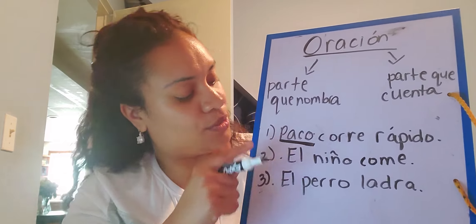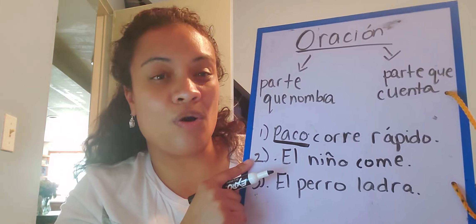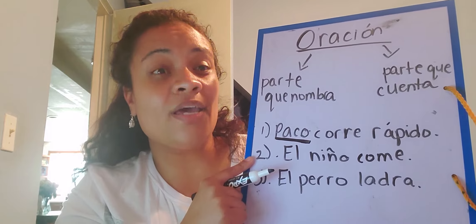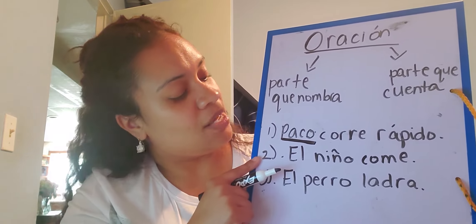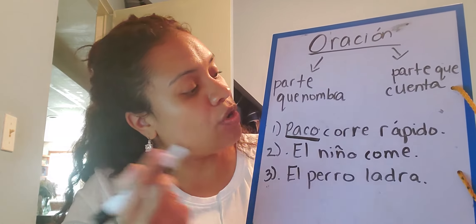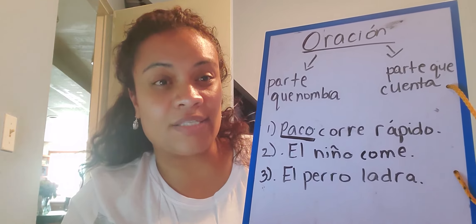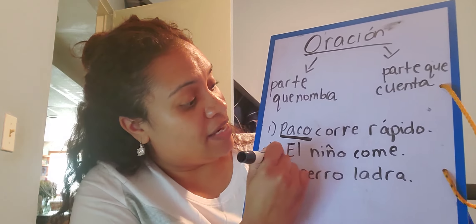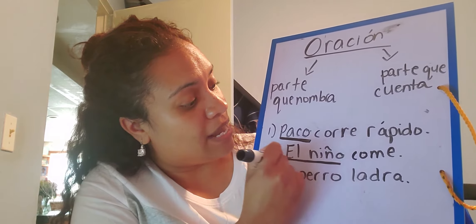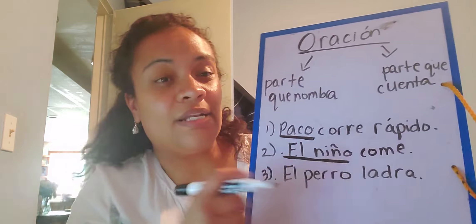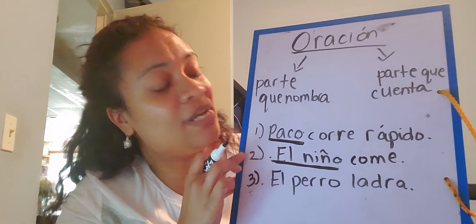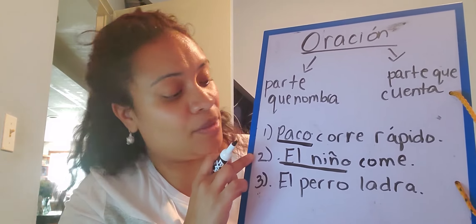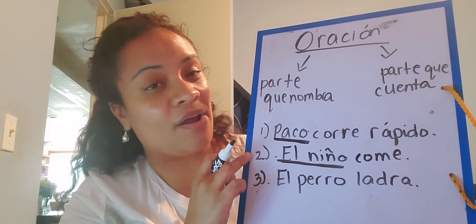Número dos: El niño come. Number two, the boy eats. So who or what is the sentence about? The boy — el niño. La oración es sobre el niño. So el niño es la parte que nombra. The boy is the part that names.